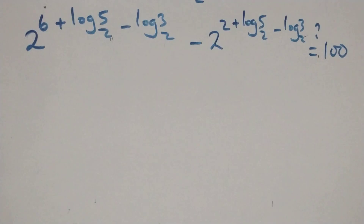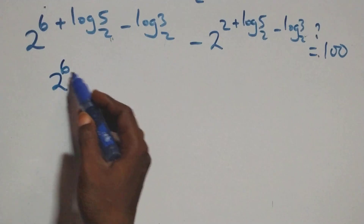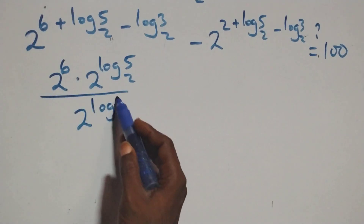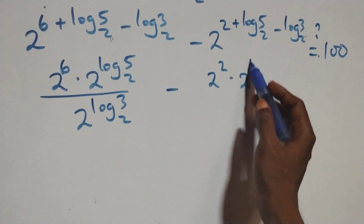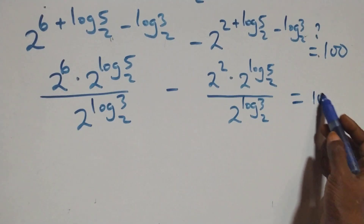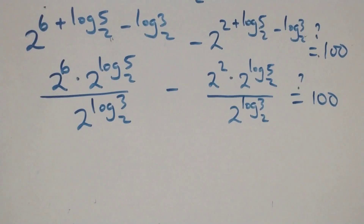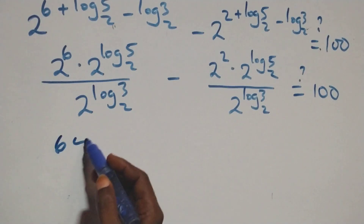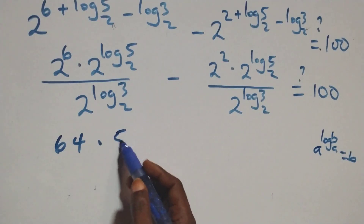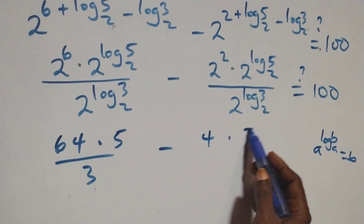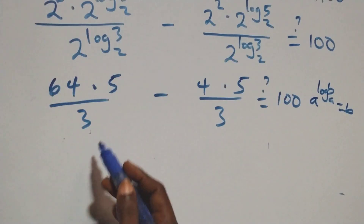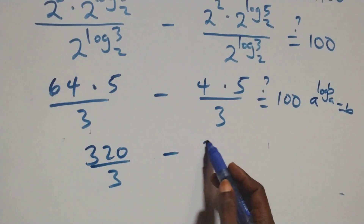Here we apply the law of indices: 2 raised to power 6 times 2 raised to power log 5 base 2, divided by 2 raised to power log 3 base 2, minus 2 raised to power 2 times 2 raised to power log 5 base 2 over 2 raised to power log 3 base 2, equals 100. Now 2 raised to power 6 is 64. By the rule a raised to power log b base a equals b, we get 5 and 3. So we have 64 times 5 over 3, minus 4 times 5 over 3, equals 100.